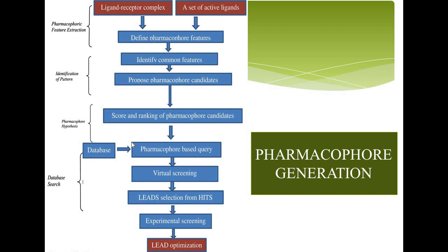The last step is the database search, in which the different databases are used for virtual screening, leading to lead selection from the hits which ultimately goes for experimental screening and lead optimization. These are the various steps for pharmacophore generation.